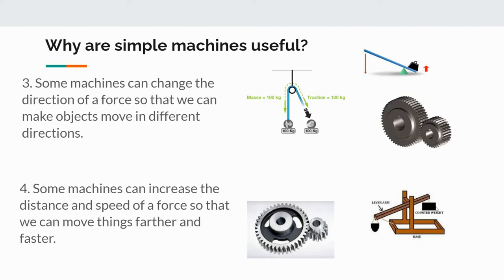A catapult is an example of a lever. Some machines can also increase the distance and speed of a force. Gears in your car can take your engine moving very fast and move the wheels a little slower but with more power. With this lever here, this part goes down a large distance, but the load only goes up a little bit. Because we're changing the distance — it moves more distance on one side but less on the other — we can increase the force, so we don't have to apply as much force to lift the object.